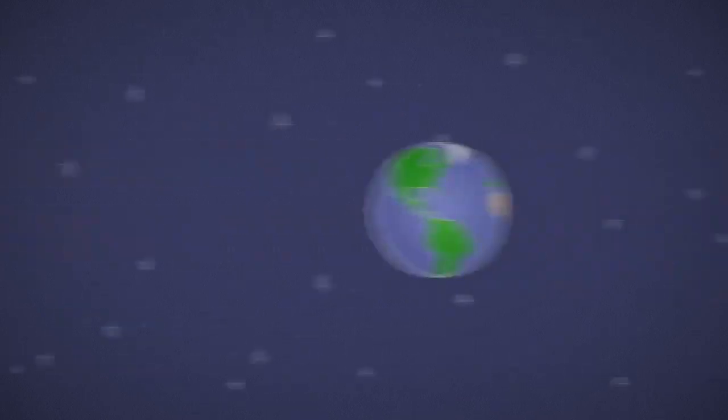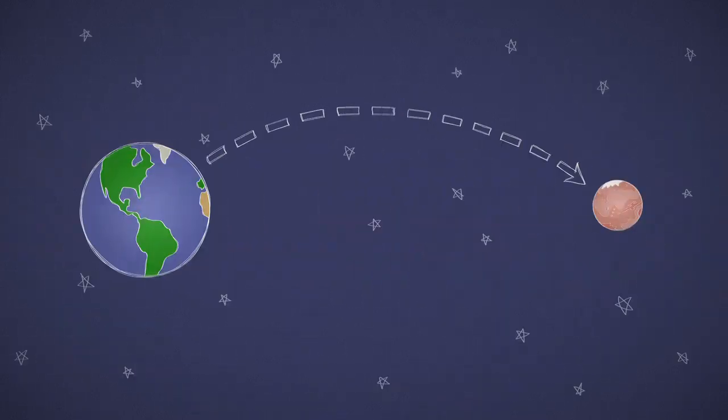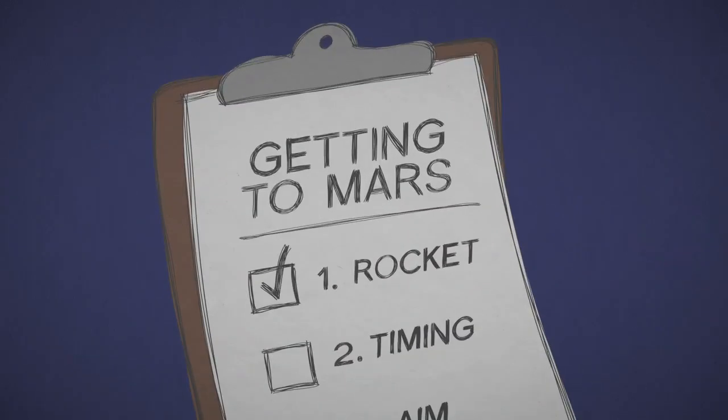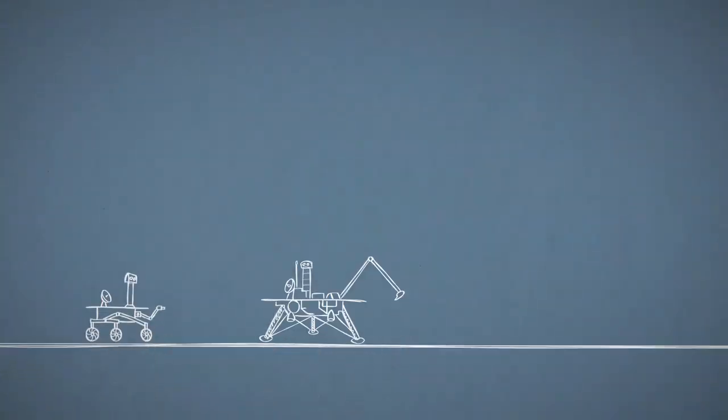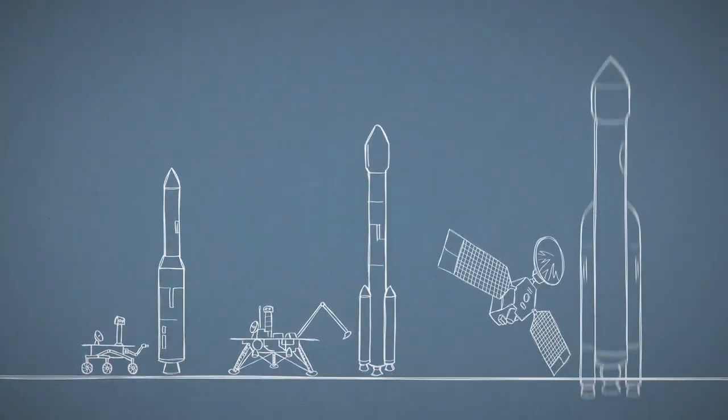How do you get to Mars? If you want to send a spacecraft all the way to Mars, first you'll need a fast rocket to escape the pull of Earth's gravity. The heavier your spacecraft, the more powerful your rocket needs to be to lift off.